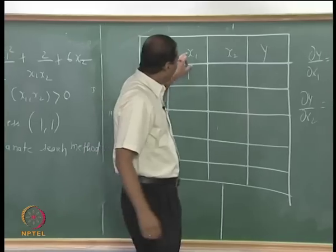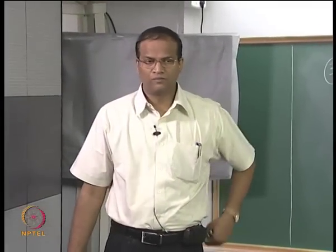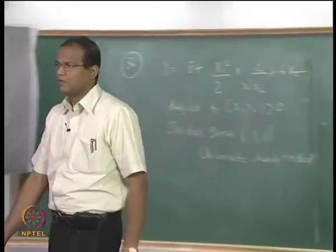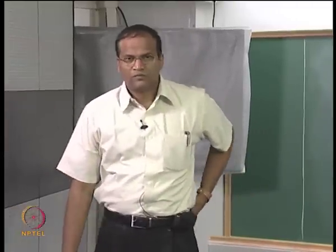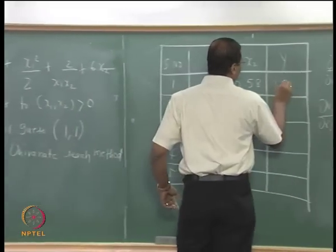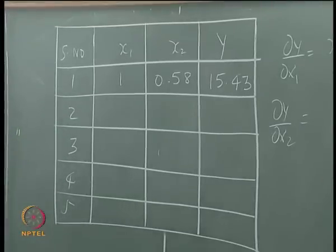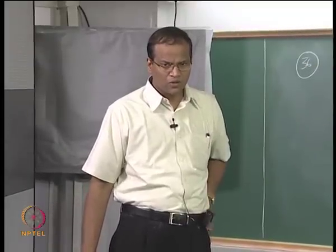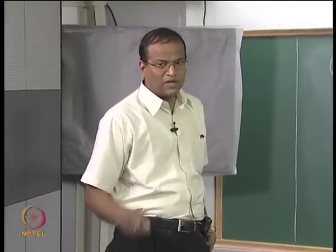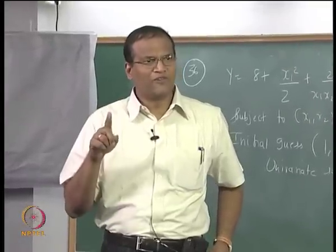Starting with x1 = 1, use this equation to get x2. The value of x2 is 0.58. Calculate y — y is 15.43. Now, using this value of x2, go to equation 1 and get the value of x1. We want to put fractional powers to keep everything under check — the information flow: first equation calculates x2, second equation calculates x1.